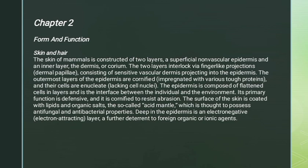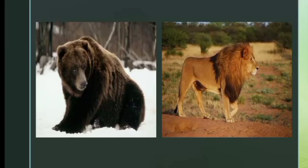Chapter 2 includes Form and Function: Skin and Hair. The skin of mammals is constructed of two layers — the superficial non-vascular epidermis and the inner layer, the dermis or corium. The two layers interlock via finger-like projections called dermal papillae, consisting of sensitive vascular dermis projecting into the epidermis. The outermost layers of the epidermis are cornified and their cells are nucleate. The epidermis is composed of flattened cells in layers and forms the interface between the individual and the environment. Each and every mammal has its own kind of fur and hair.